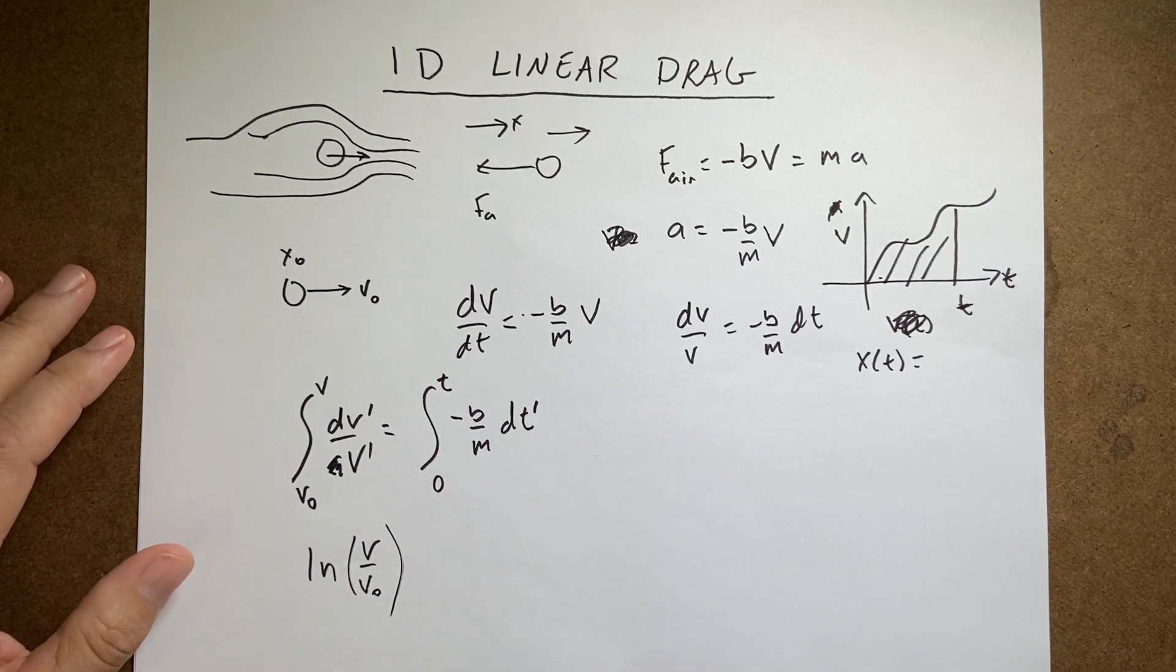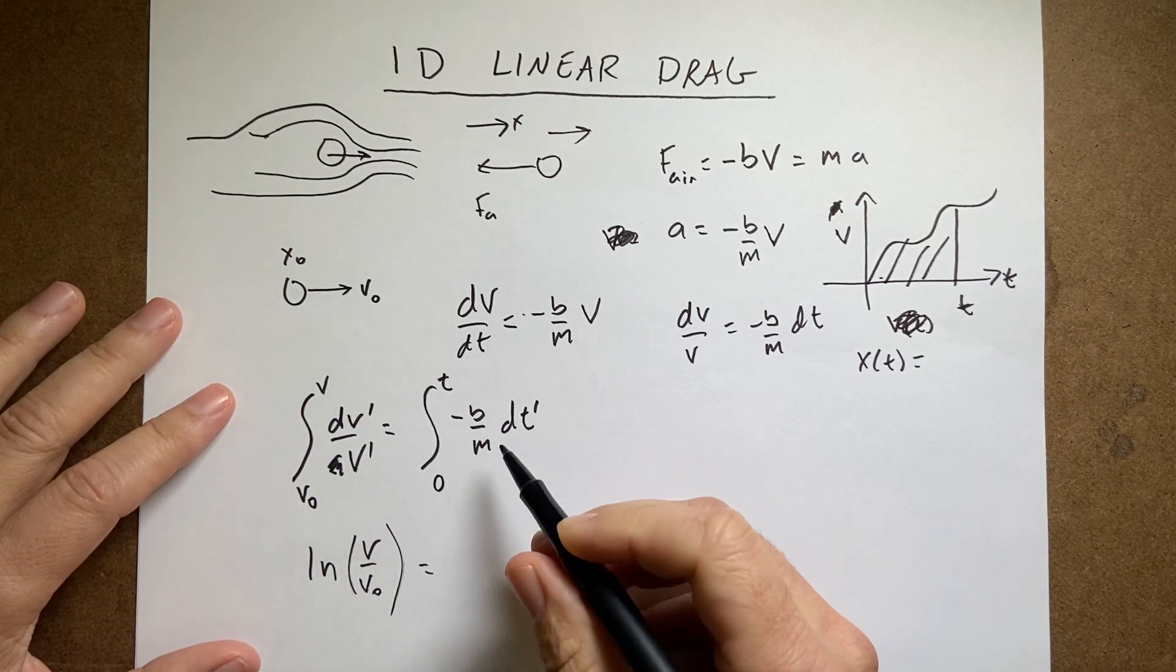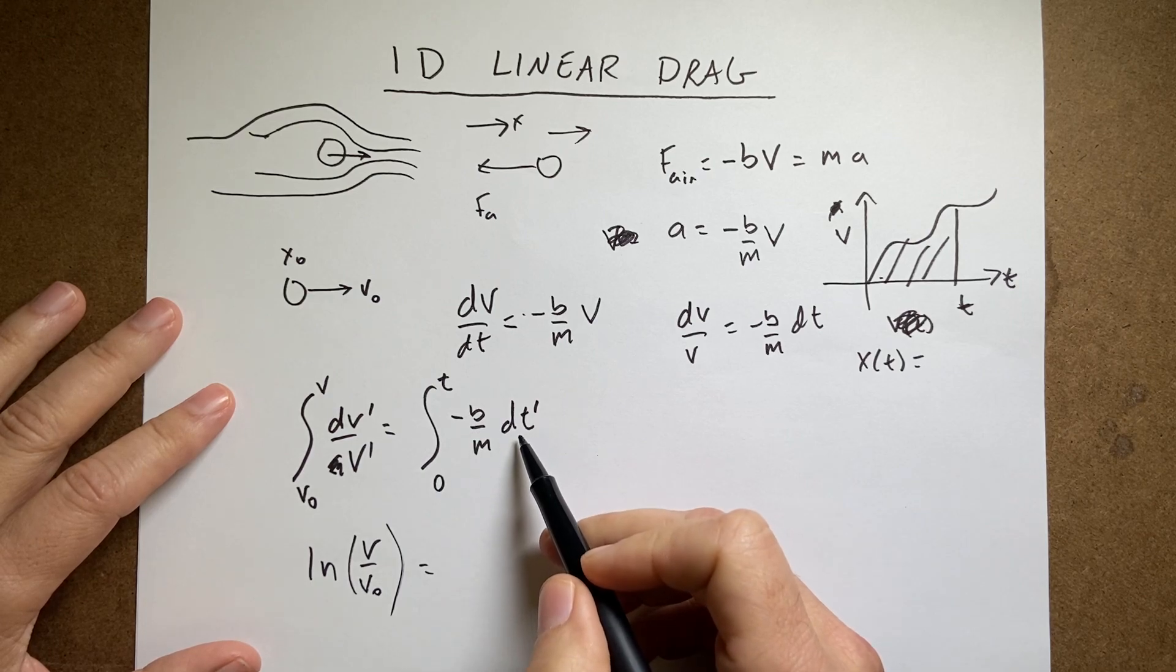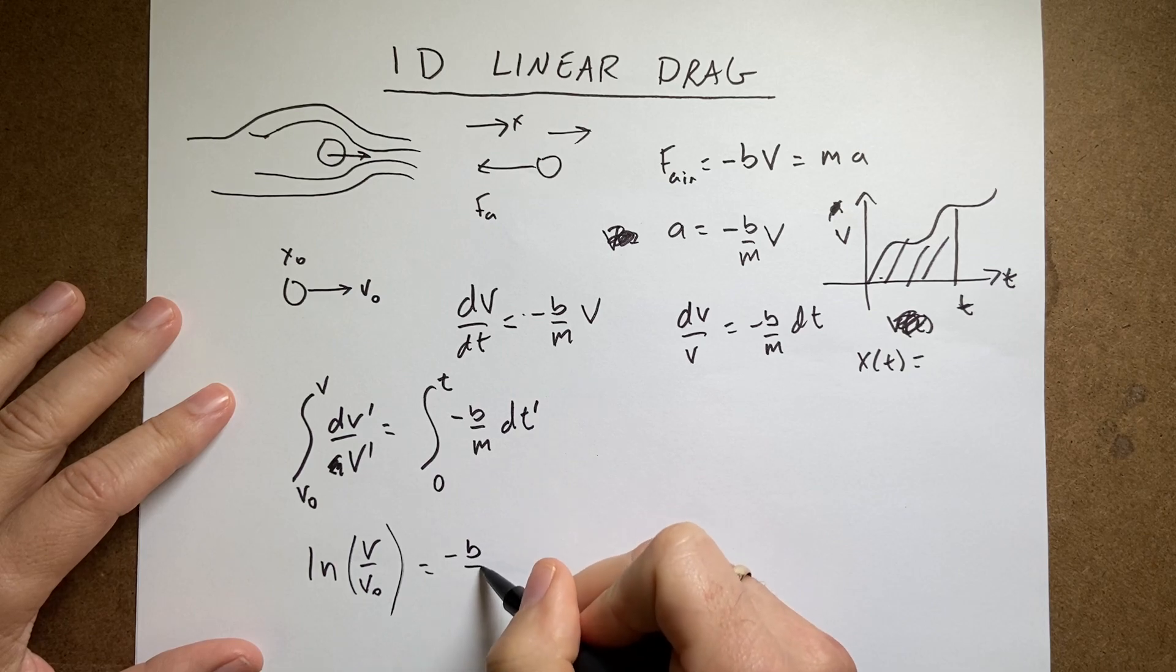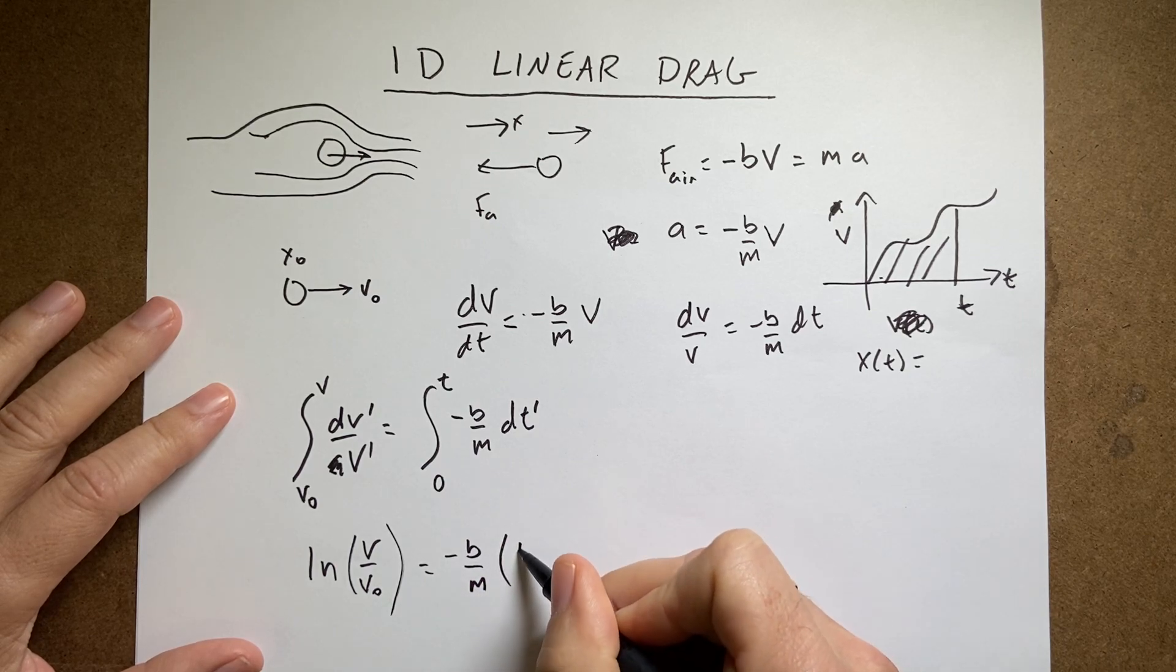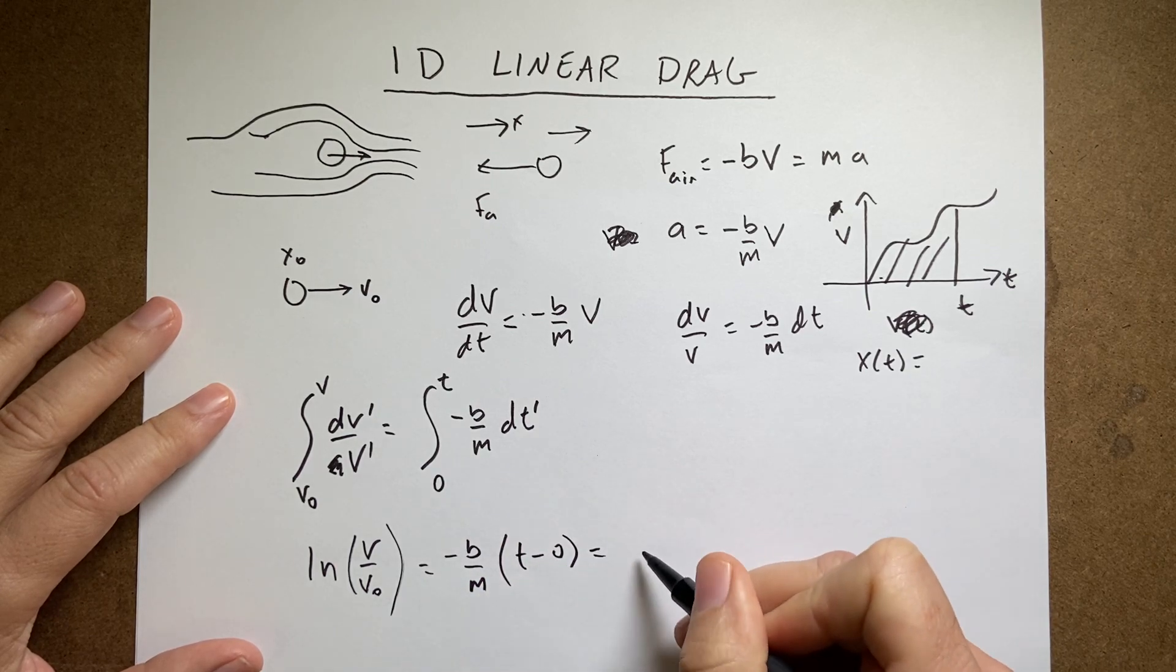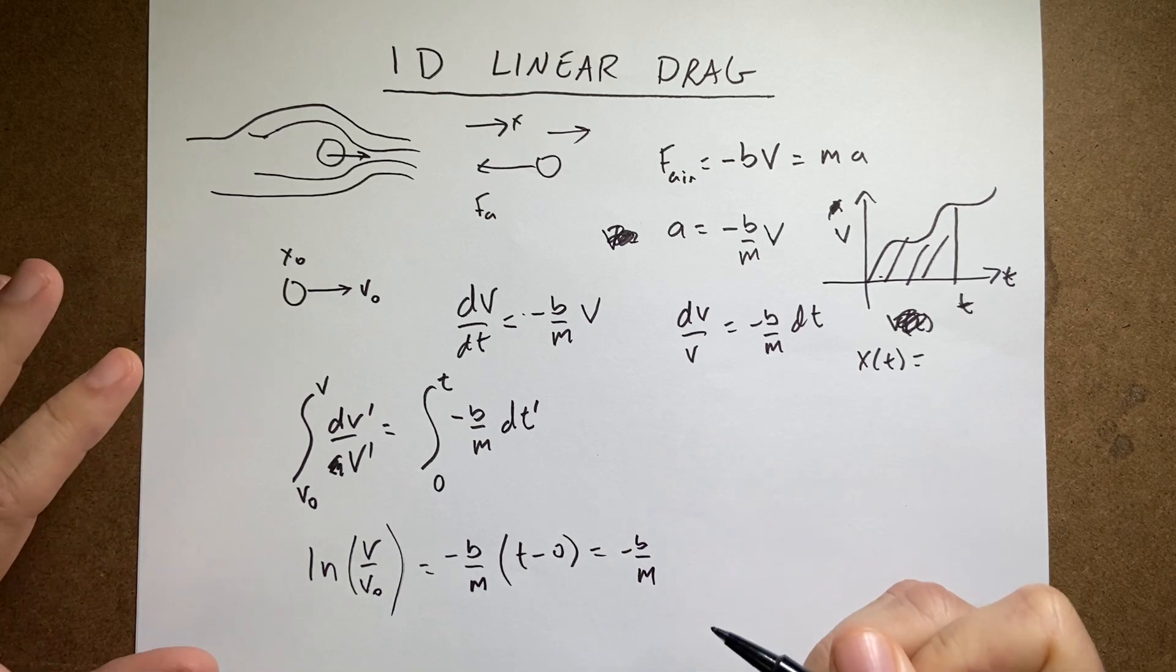And that's the best way to do that. And on this side, I get the integral of dT prime is going to be T. So I get negative B over M and then T minus 0, so negative B over M T. So I'm pretty happy.